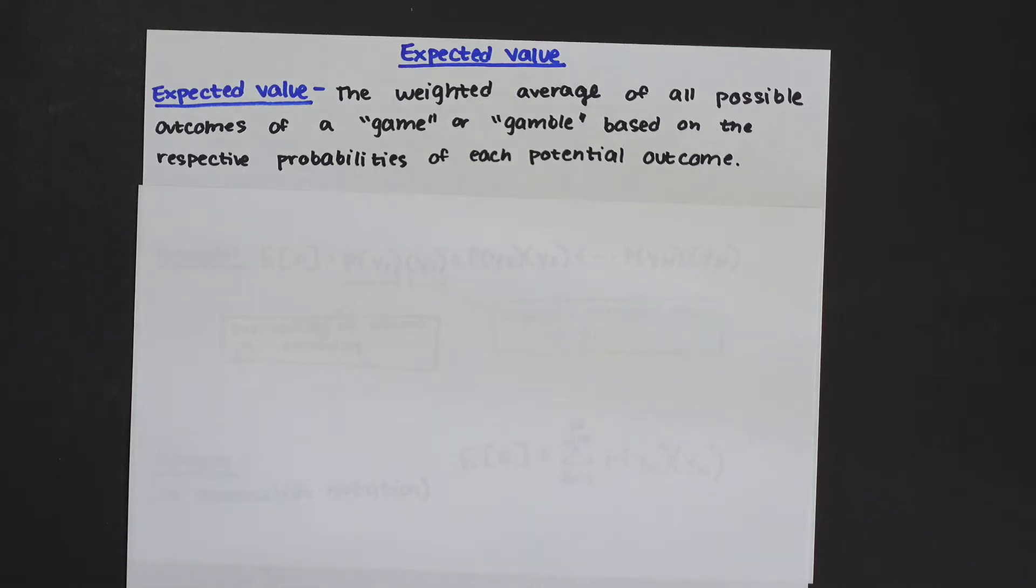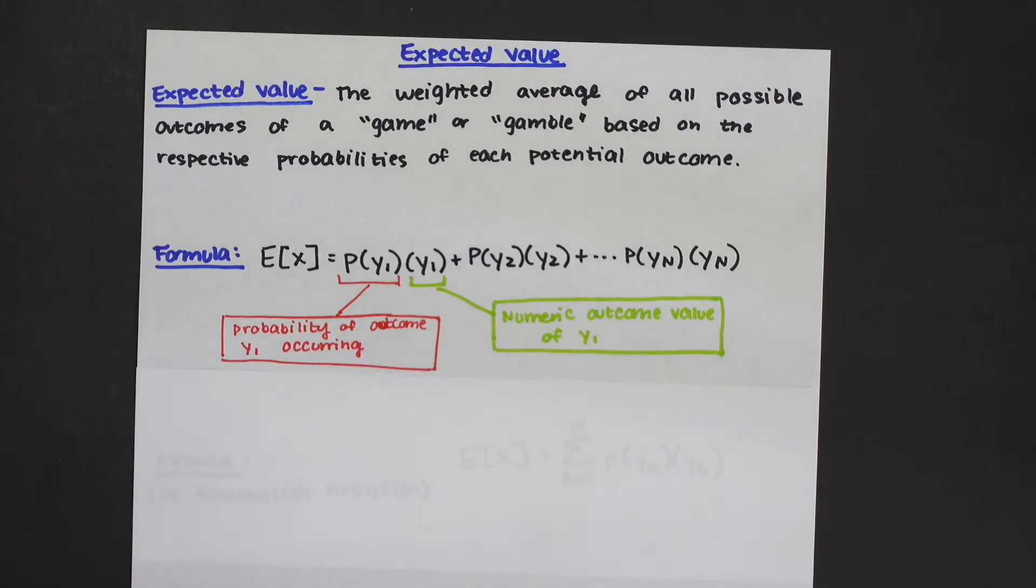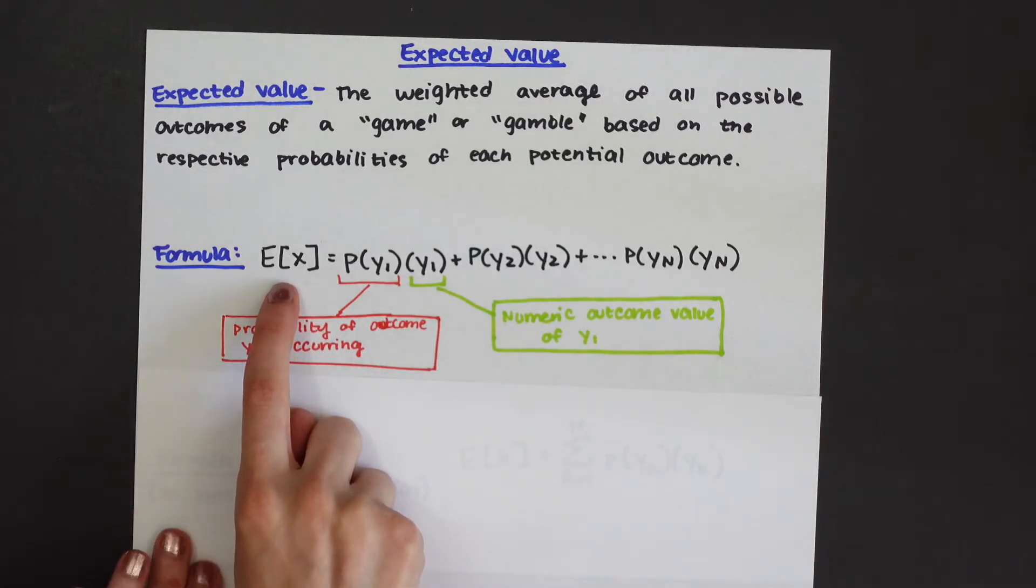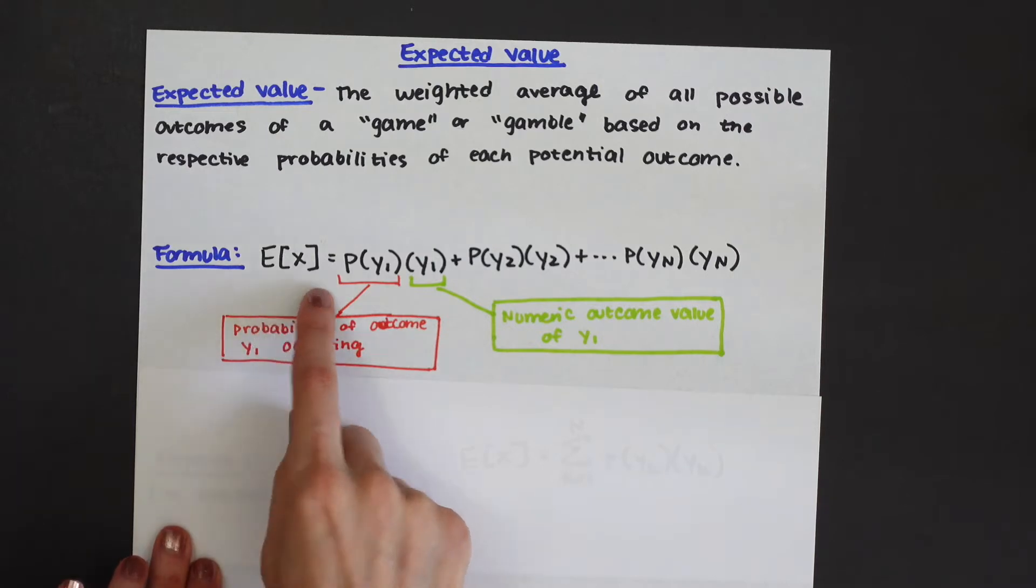But before we even get to the examples let's also look at the expected value formula. This could look crazy but let's break down what this means. We have E[X] which just means the expected value is equal to P(y1). This just represents the probability of outcome y1.